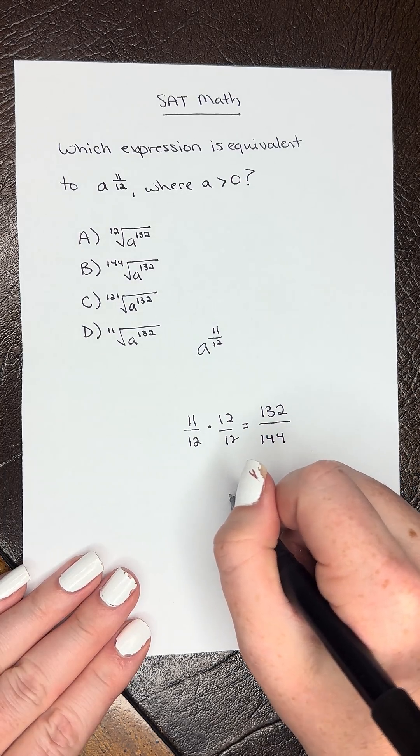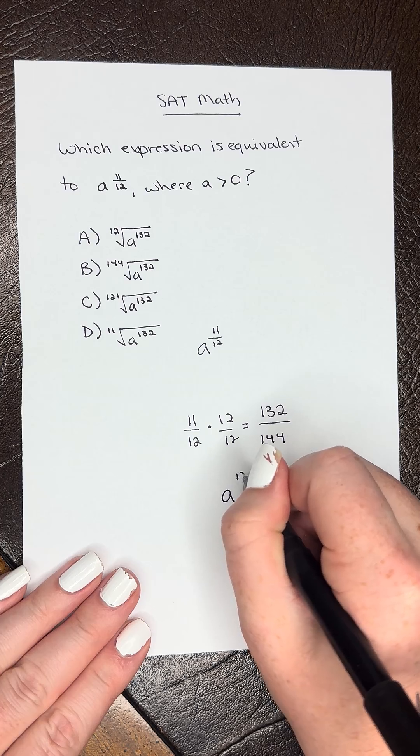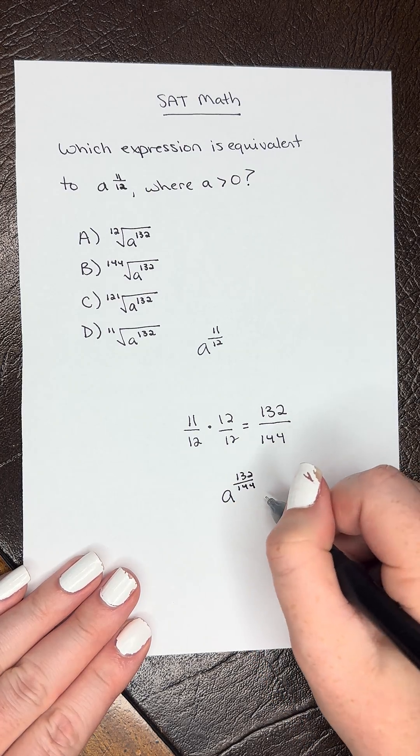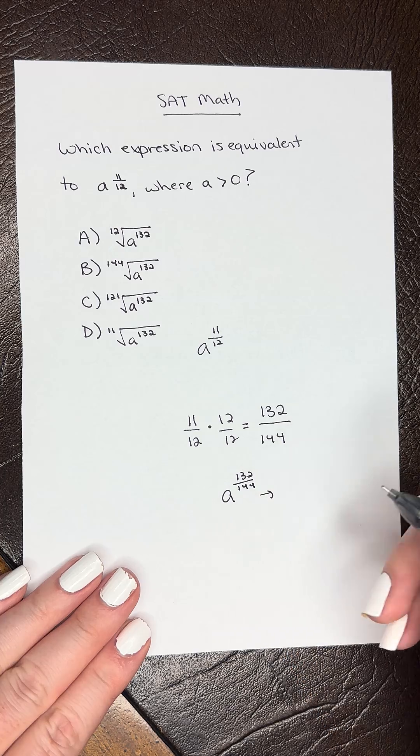And so if we bring back our a, we have a raised to the 132 over 144. Now we need to convert this to our radical form.